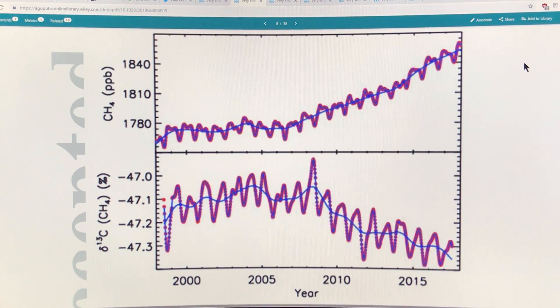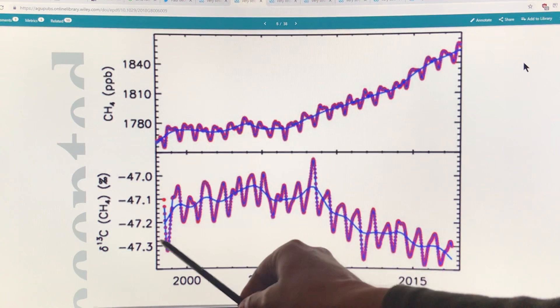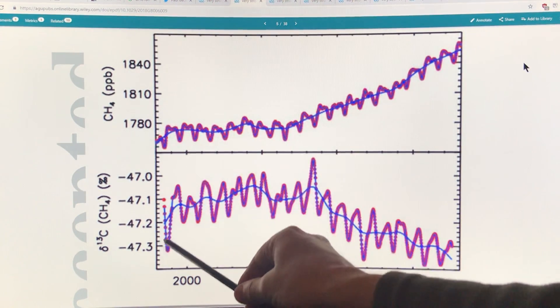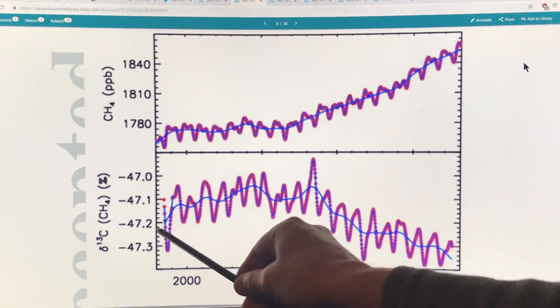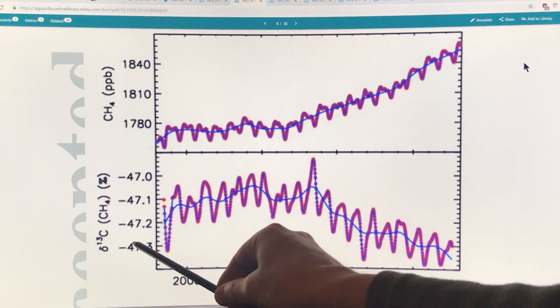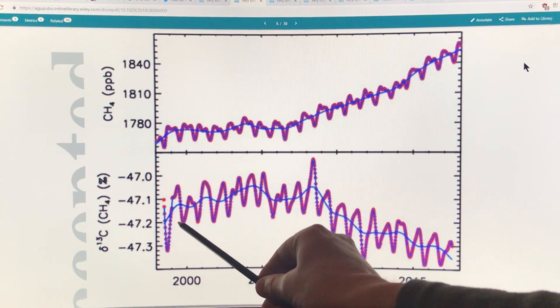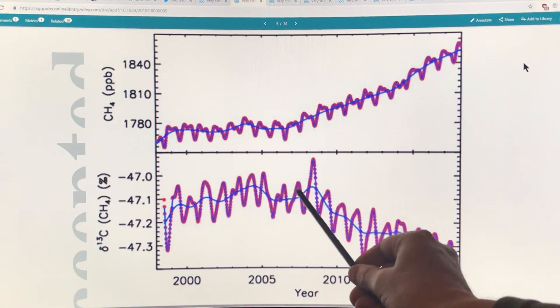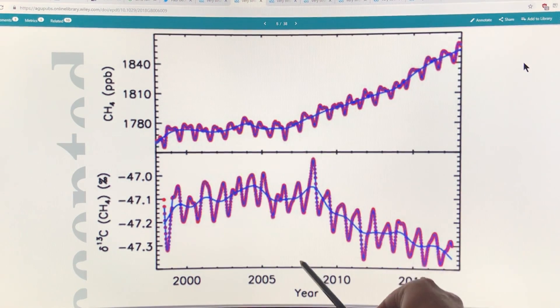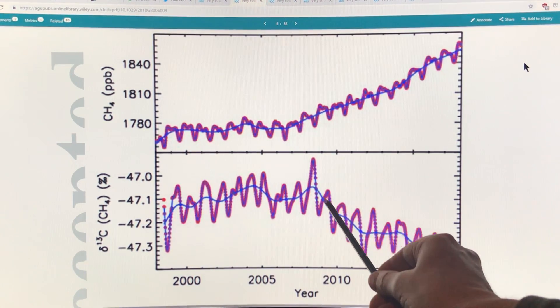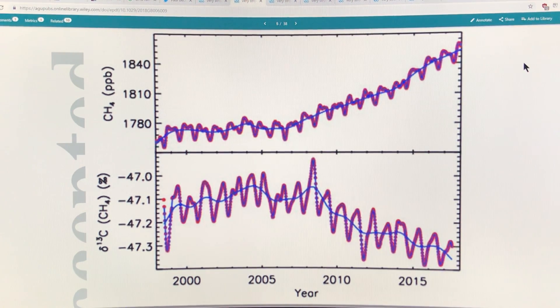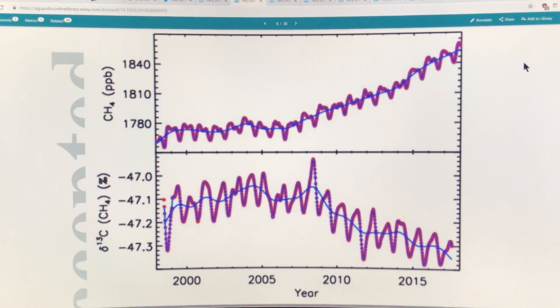Down at the bottom here we see the delta 13 of carbon in methane, so there's a deficit of the heavy carbon. There was a slight increase here and then shortly after 2007 a strong decrease in that isotopic ratio.